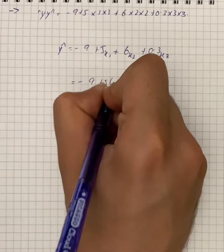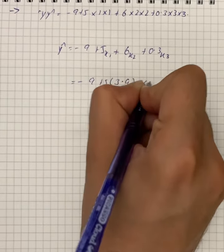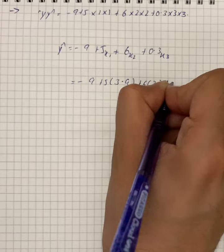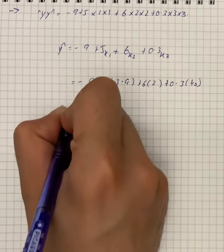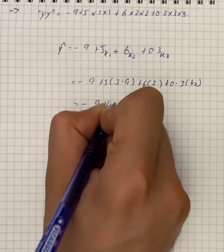-9 + 5 times 3.9 + 6 times 2 + 0.3 times 40. We have -9 + 43.